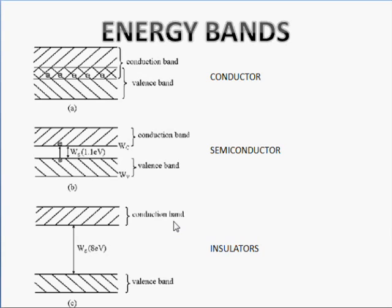First of all, let me introduce what energy bands are. For each orbit, there are certain energy levels or bands associated with it. These bands are the only permitted energy levels and electrons can exist in these levels and nowhere else. For a valence orbit, this energy level is known as the valence band.